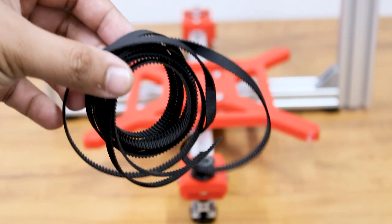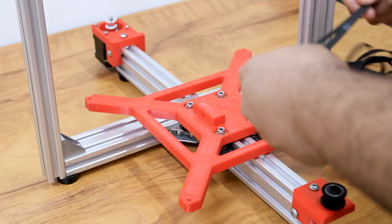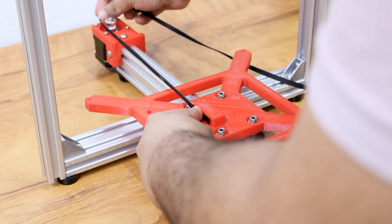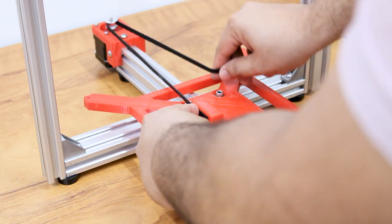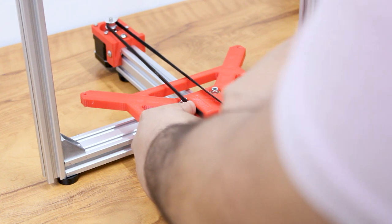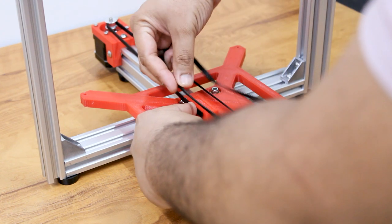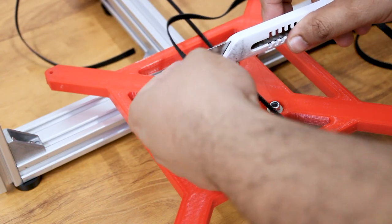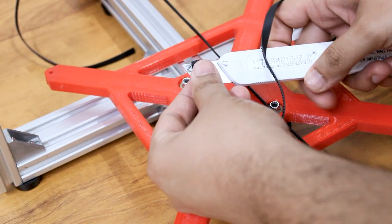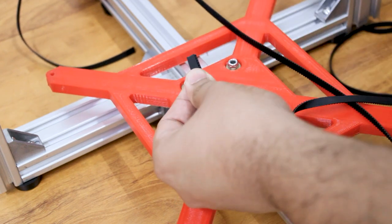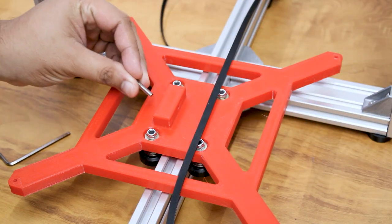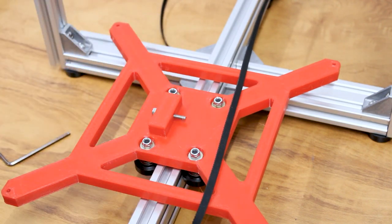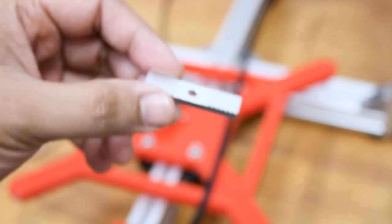Now we place the belt through the ends of the pulleys, cut it to required length, and attach using the aluminum belt clamp.